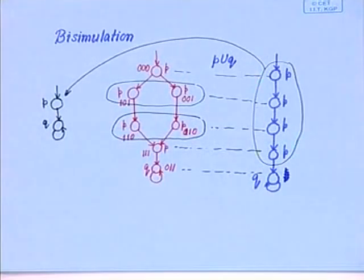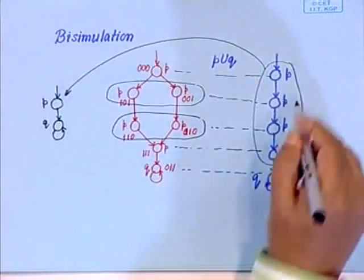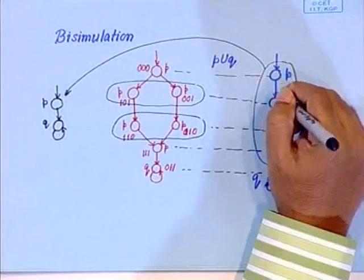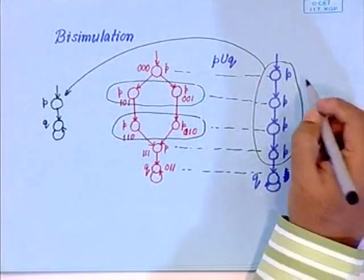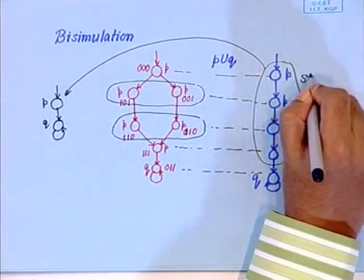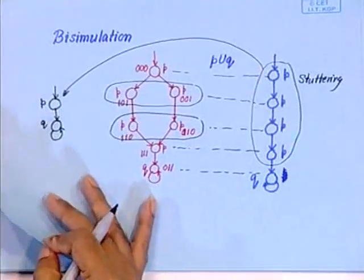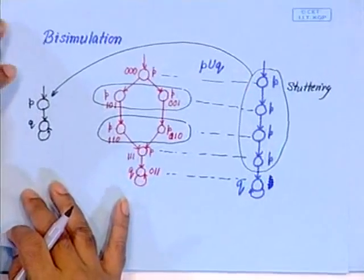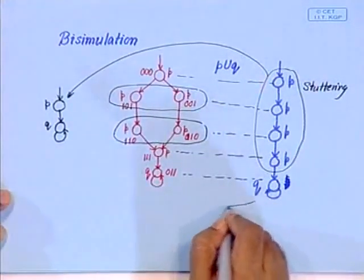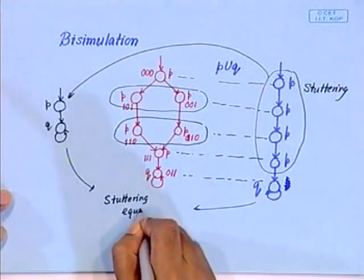If you ignore timing — or you can say that it can stay in a state for some time — then these two are equivalent if you ignore timing. Now, when the state machine is staying in a state where the output does not change, like in these four states where output p is the same in all those four states, then we say that the machine is stuttering. We say that these two machines are stuttering equivalent.